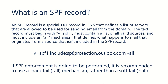You would have v=SPF1, you would have an include to include the record spf.protection.outlook.com, and we would add a -all at the end, which says to perform a hard fail for any other source not included in this SPF record. A hard fail, in most cases, is going to reject mail that comes from a source not listed in your SPF record.